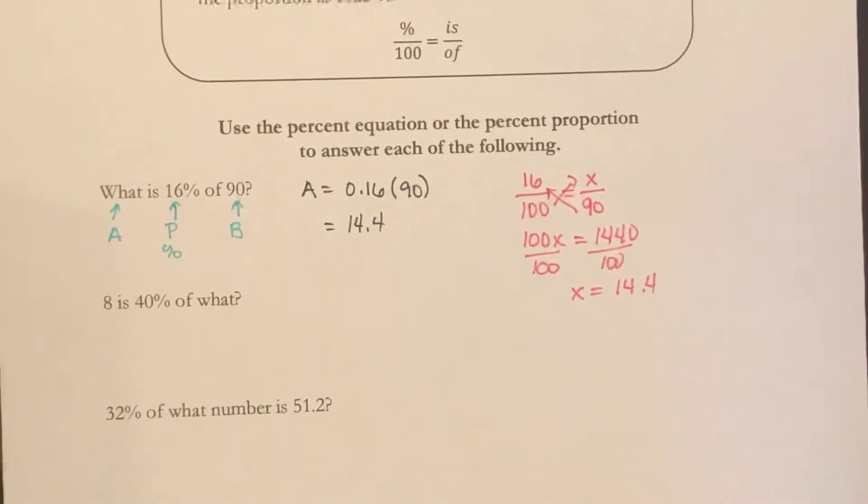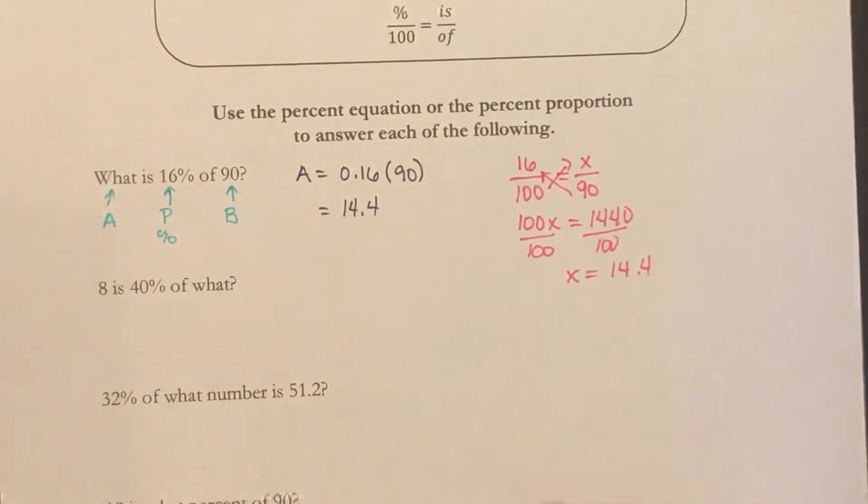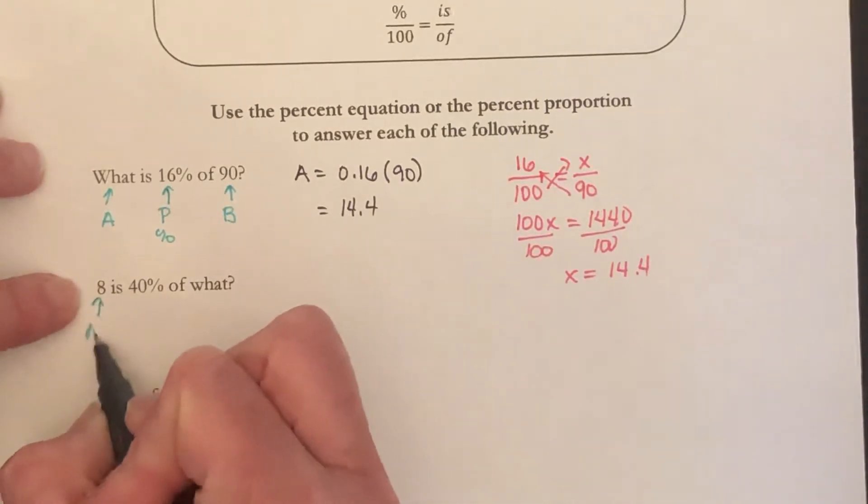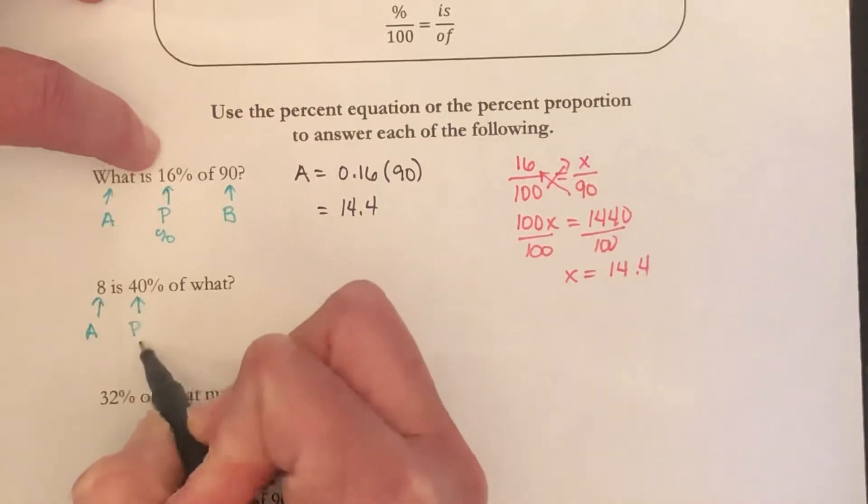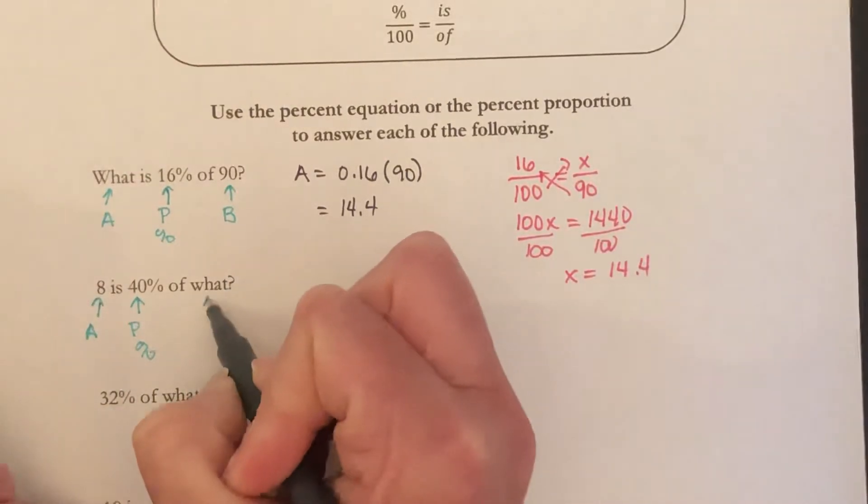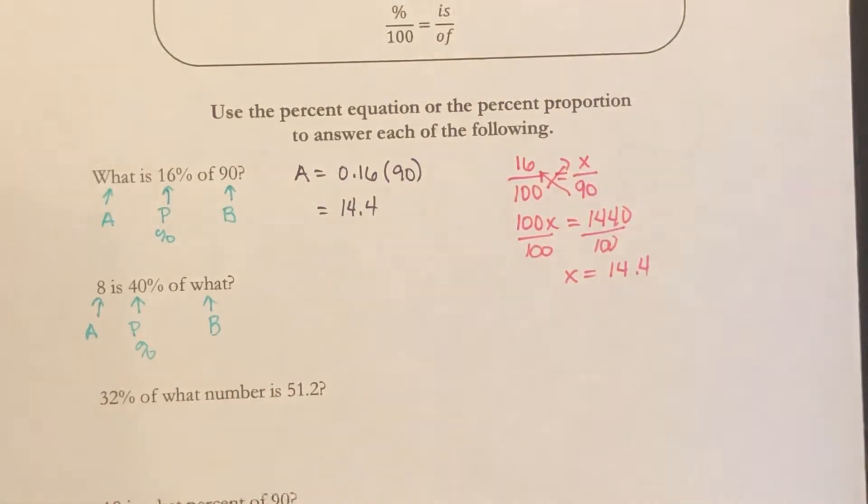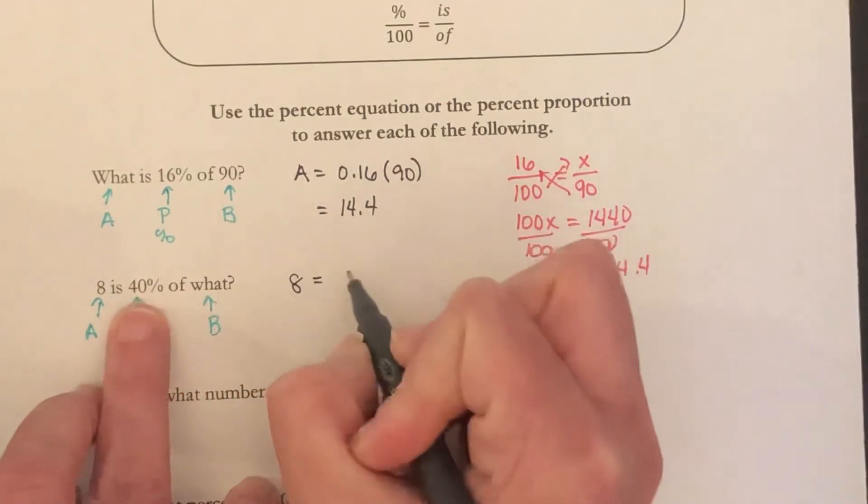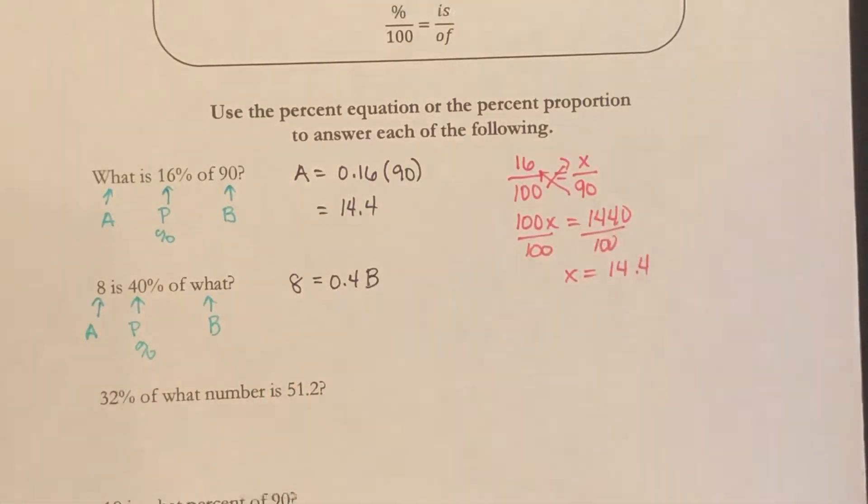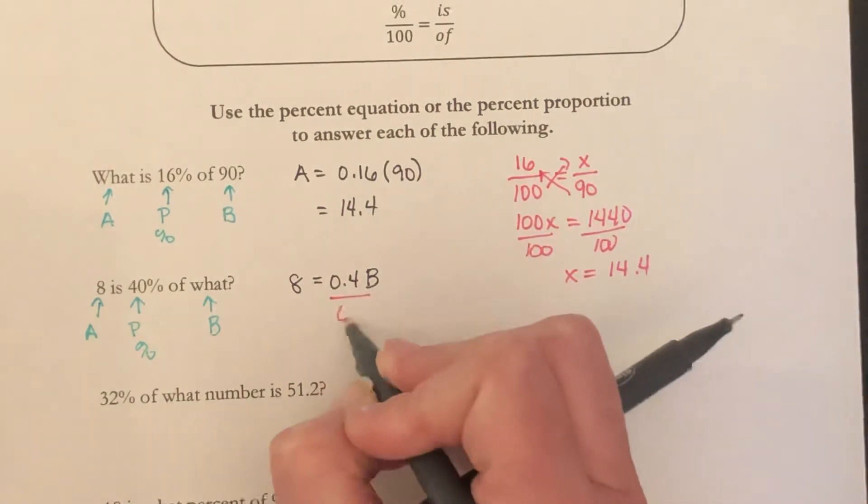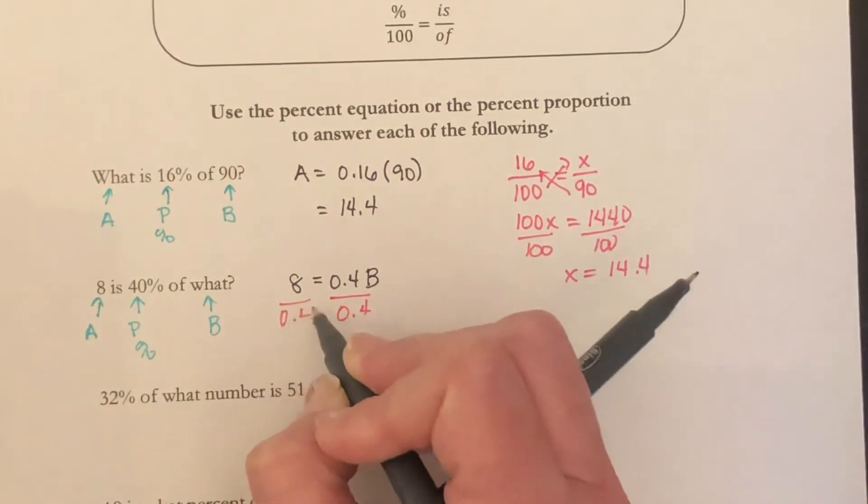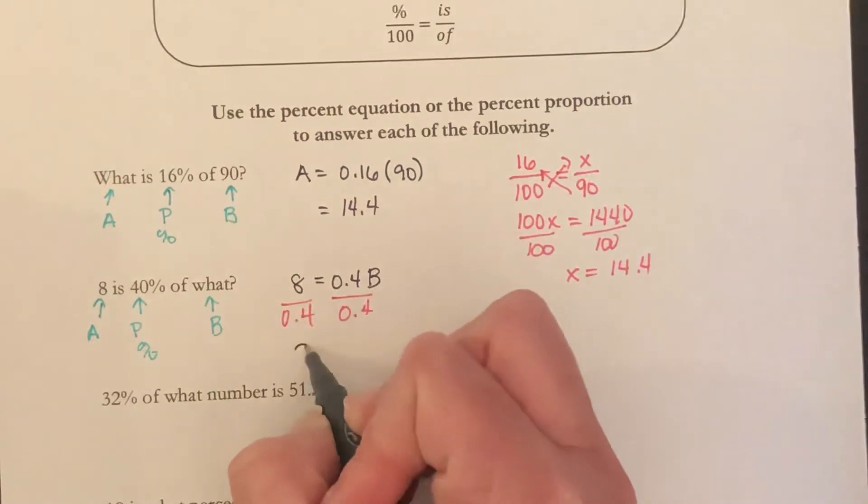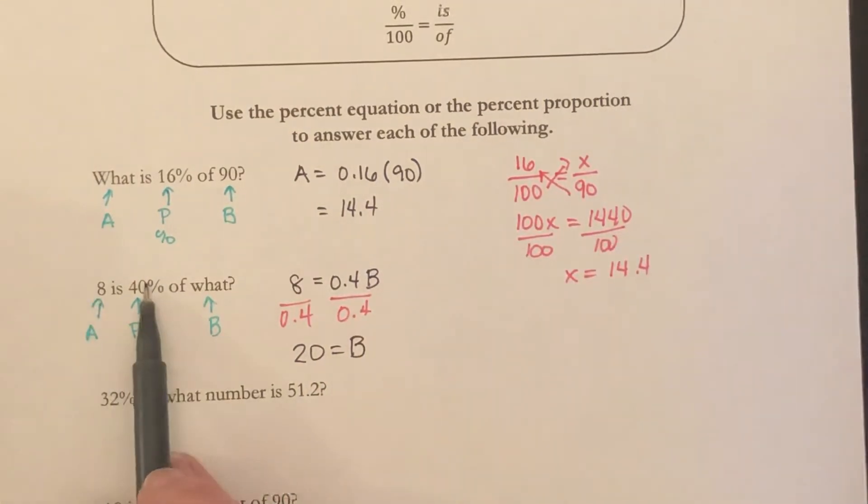So let's do 8 is 40% of what. This time we have the is, that's our A, we have the percentage, and we are missing B. If we plug this into the percent equation, we have 8 is equal to 0.4 times B. To solve this, I would need to divide both sides by 0.4. And 8 divided by 0.4 is 20. So 8 is 40% of 20.